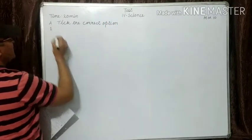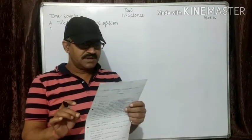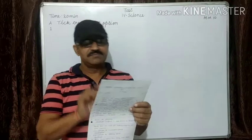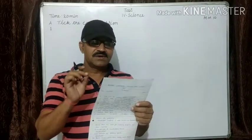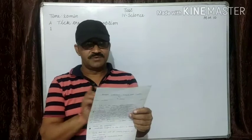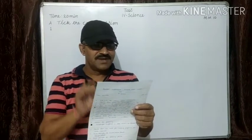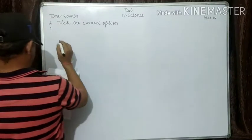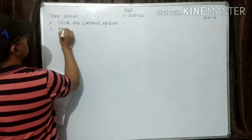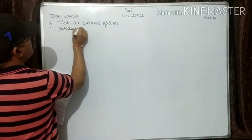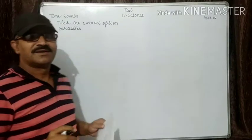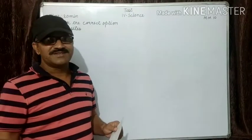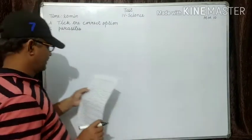Number one: tapeworms and roundworms are - A parasites, B scavengers, C carnivorous, D omnivorous. Answer is parasites. You know parasites, the organisms which take their food from the living body, that is known as parasites.